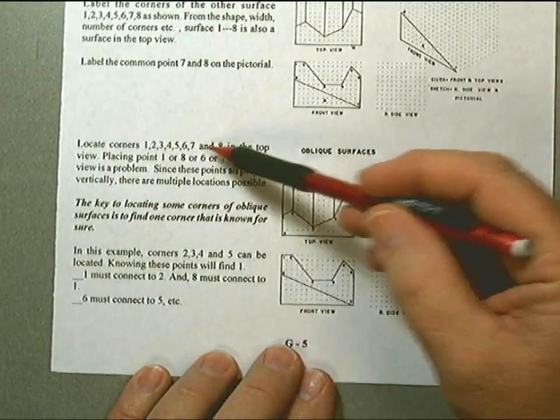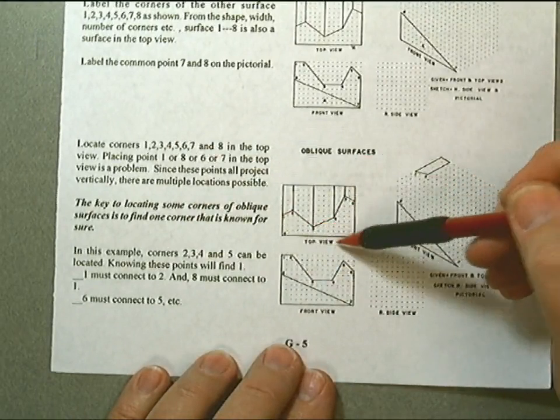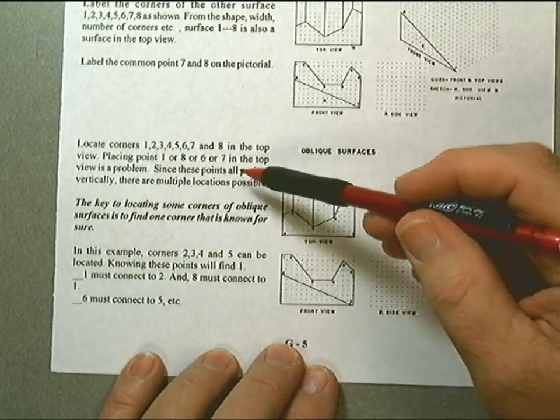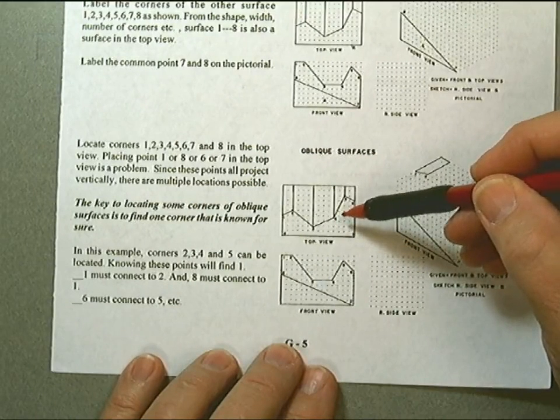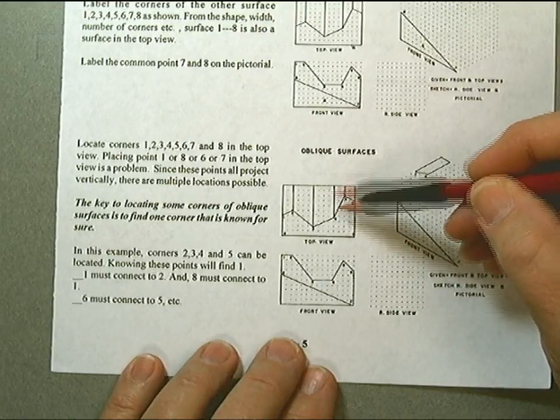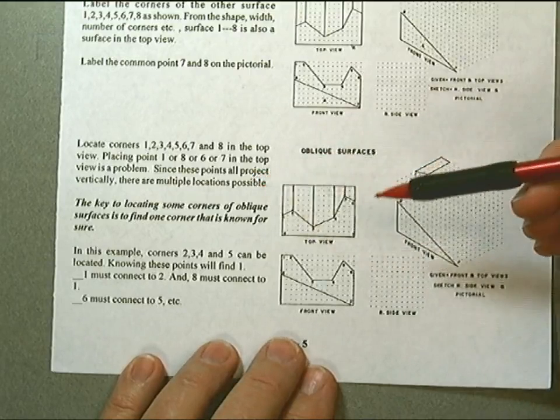We locate corners 1 through 8 in the top view. Placing point 1, 8, 6, or 7 in the top view is a problem. Since these points all project vertically, there are multiple locations possible.